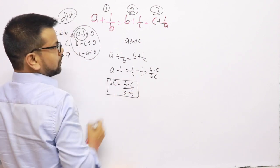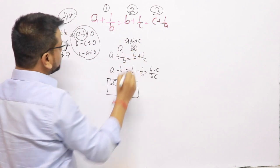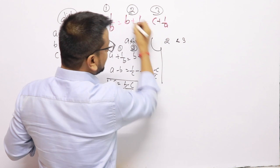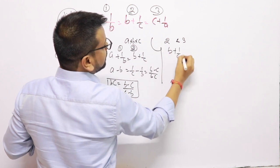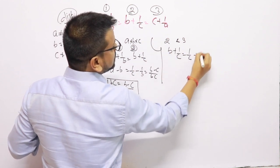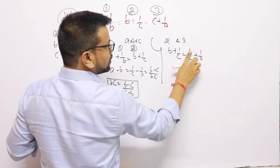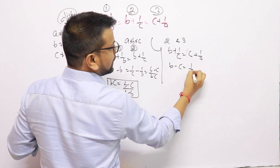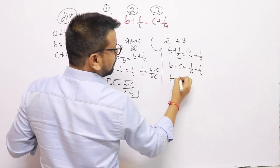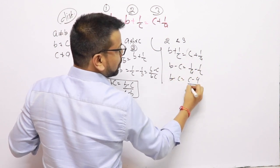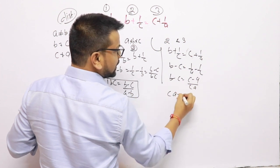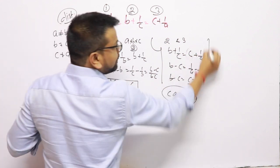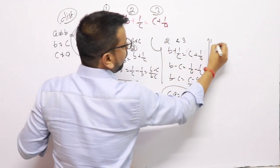I note that result — derived from equations 1 and 2. Now working with equations 2 and 3: b + 1/c = c + 1/a. This gives b−c = 1/a − 1/c = (c−a)/(ca). So ca = (c−a)/(b−c). That is the second equation.